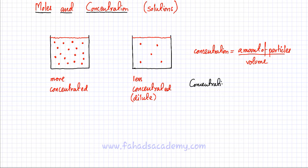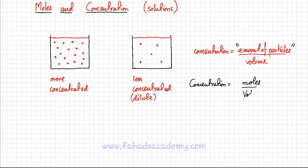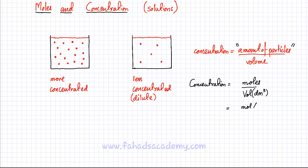Concentration equals the amount of particles calculated in moles divided by volume. So: concentration = moles / volume. In stoichiometry, volume is generally taken in dm³, so the unit for concentration is mole per dm³ (mol/dm³).